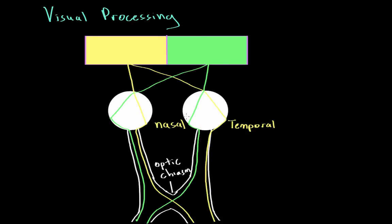What this effectively does is take all information entering the eyes from the right visual field and send it to the left side of the brain, and all information from the left visual field goes to the right side of the brain. So just like the rest of the body, visual information follows a contralateral pattern.